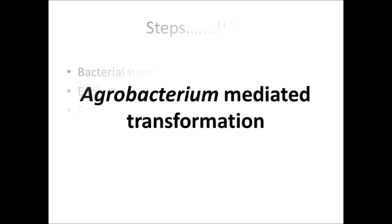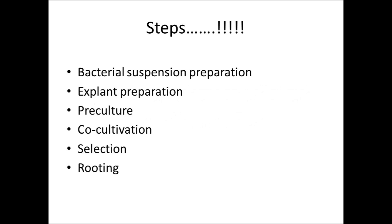Agrobacterium-mediated transformation. The six steps involved in Agrobacterium-mediated transformation are: bacterial suspension preparation, explant preparation, preculture, co-cultivation, selection, and rooting.